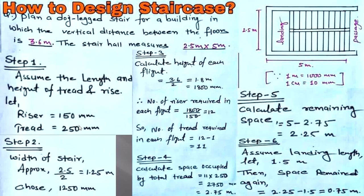Step 2: Width of stair. Since there are two flights, the width is approximately 2.5 divided by 2, which equals 1.25 meters. So the width of one flight is 1.25 meters. Choose 1250 mm for the width of each flight.